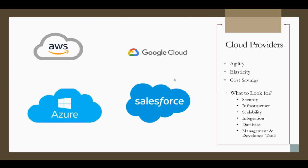Looking at major cloud providers: AWS is huge and can crunch a lot of data, letting you write applications on top. Google Cloud has a very good analytics engine — my company uses that and AWS as well. Windows Azure is a Microsoft product which does a lot of good things as far as cloud computing is concerned. The last one I've listed is Salesforce, which I'm going to go a little deeper into.